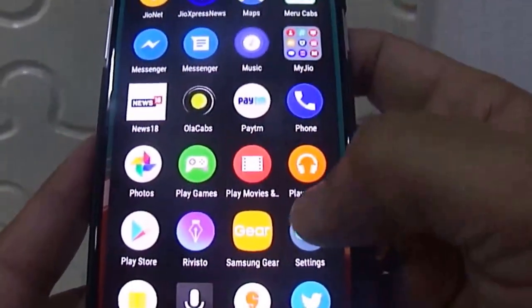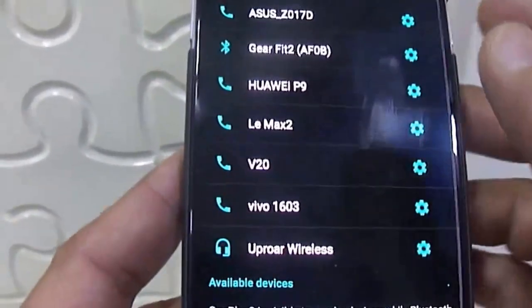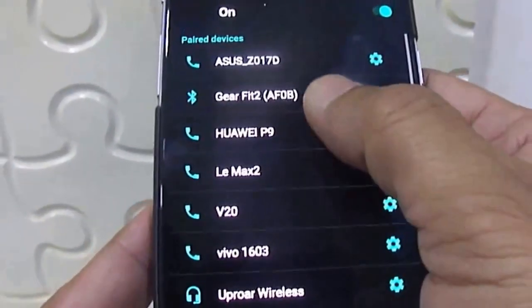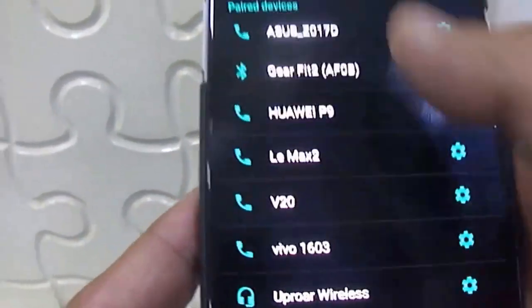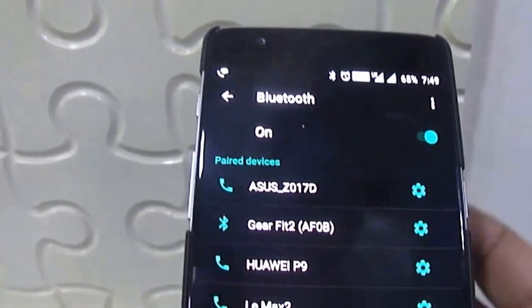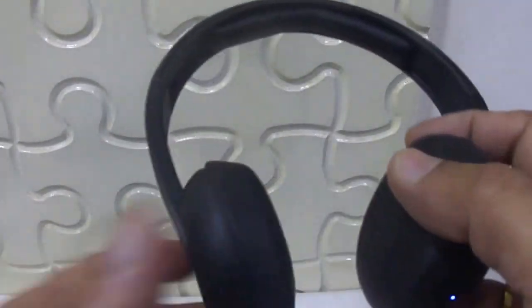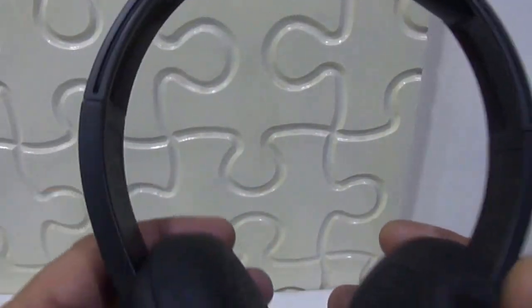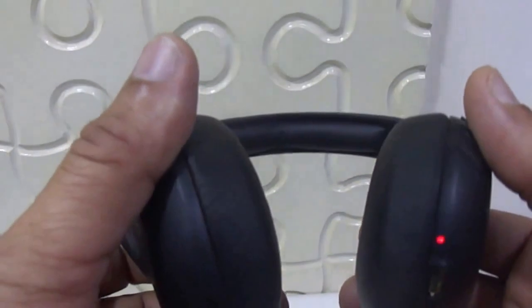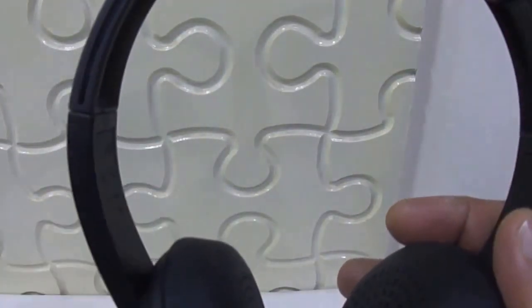Go to Settings, Bluetooth, and it will show here. You can see here this Uproar wireless has been paired with my smartphone, so it's very simple. When you go out of range of your Bluetooth this will be automatically disconnected, but when you come back into range this gets automatically paired with your phone.